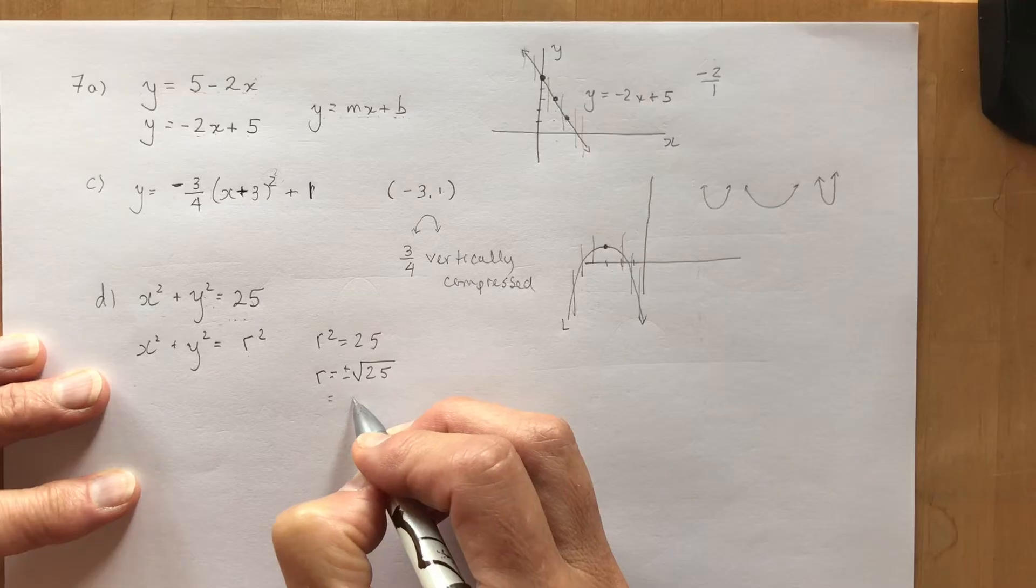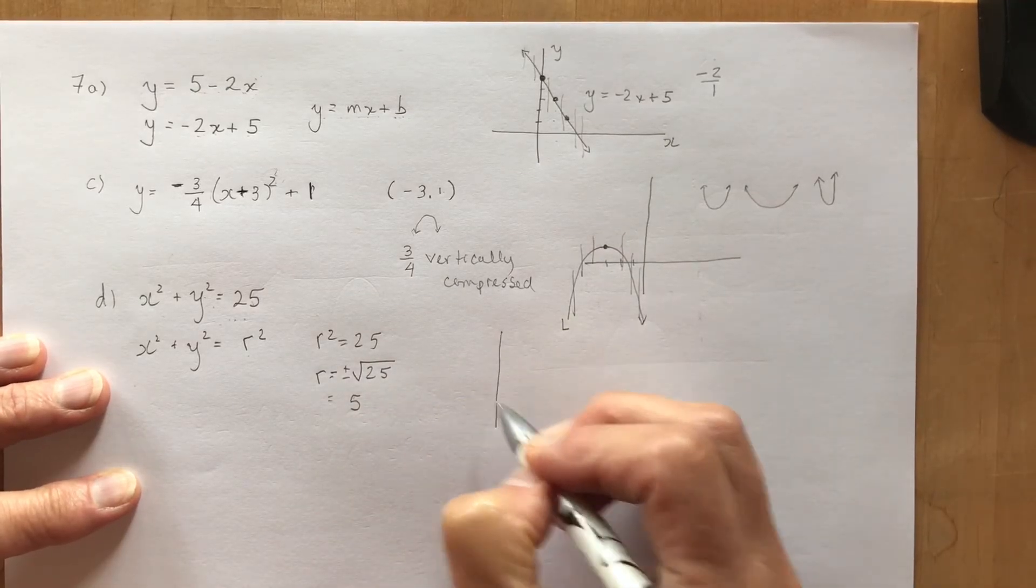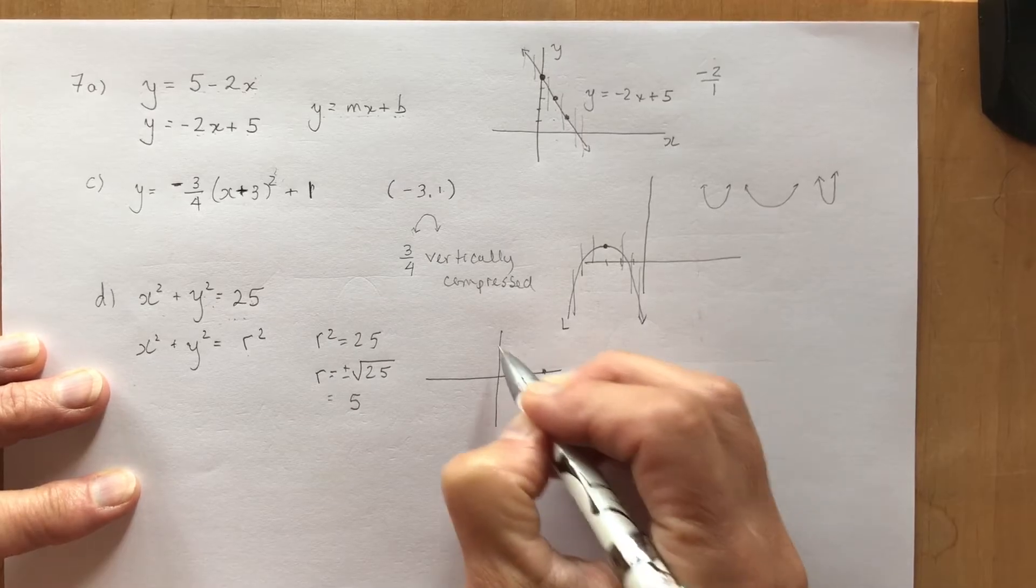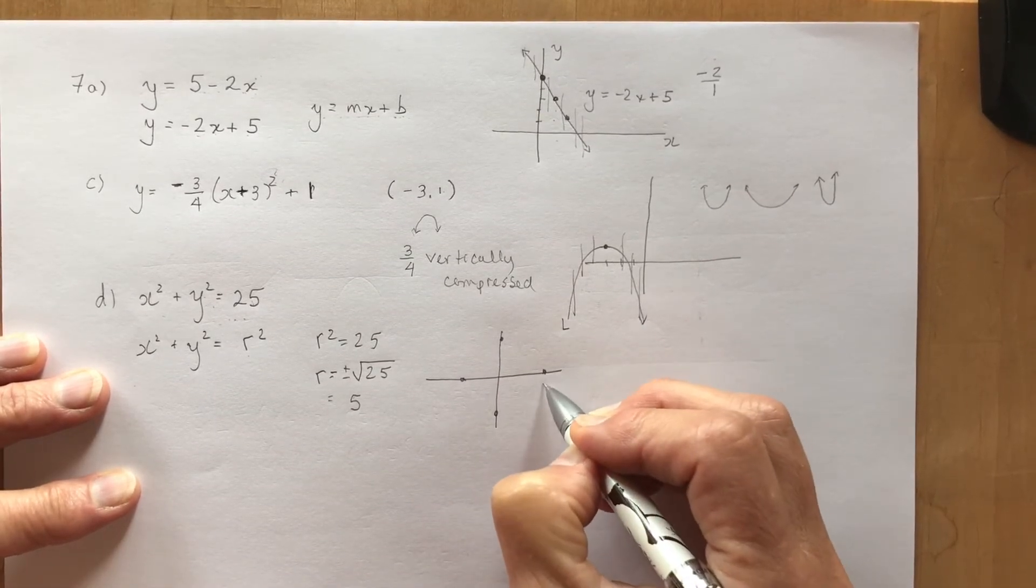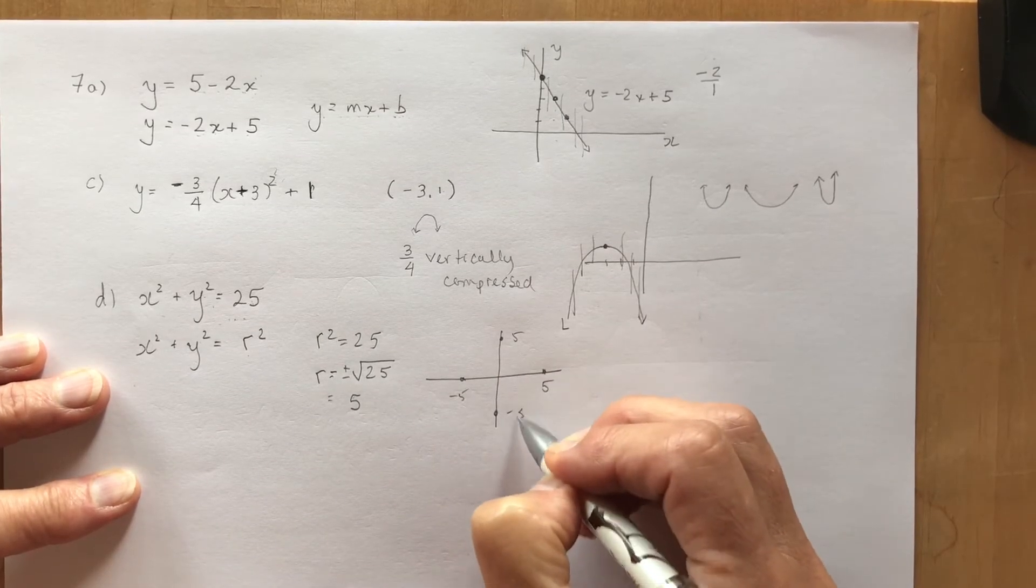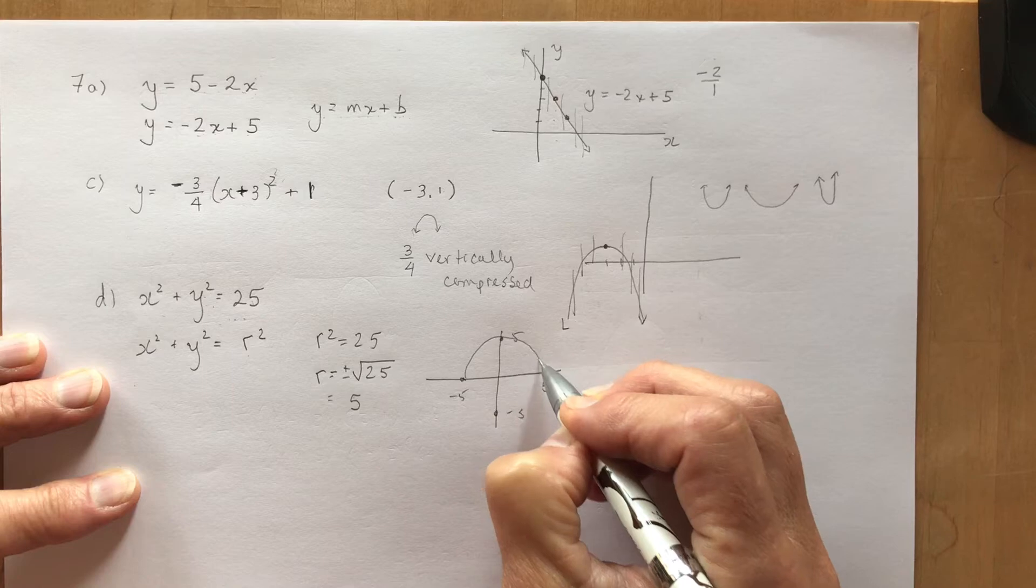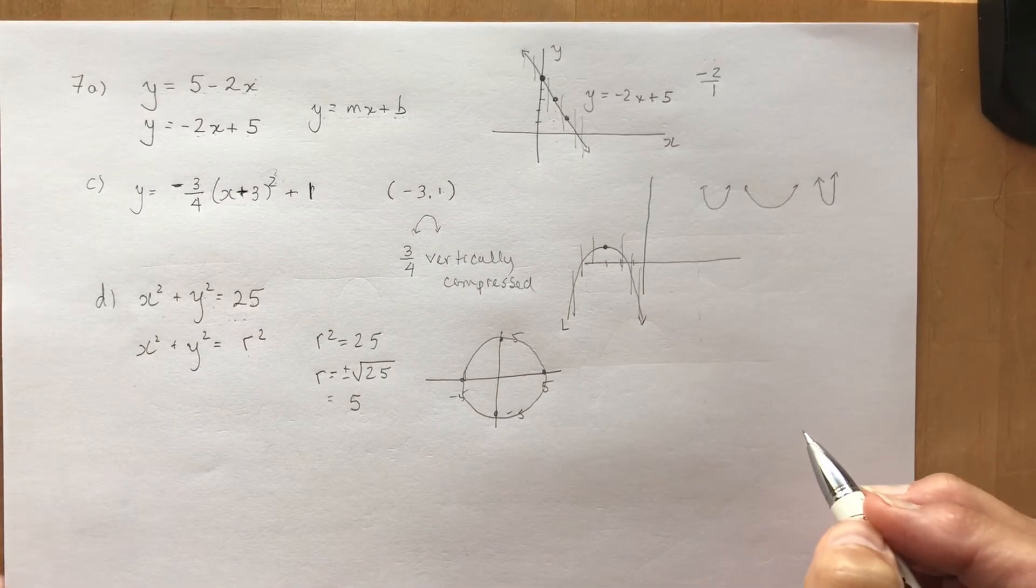So if r squared is 25 then r is equal to the square root of 25, actually plus or minus. So the radius which has to be a positive length is going to be 5. If you were to sketch it, it would have all of these points at 5. So this would be plus 5, minus 5, plus 5, minus 5 and your circle is going to go like that.